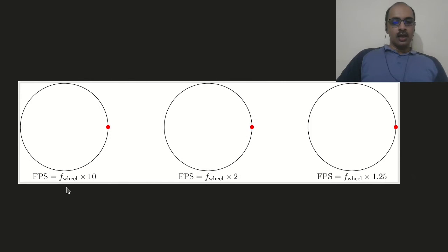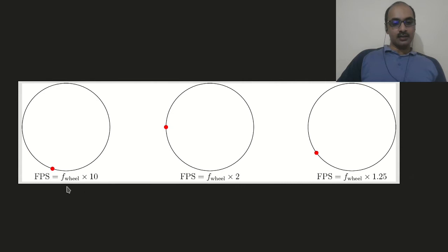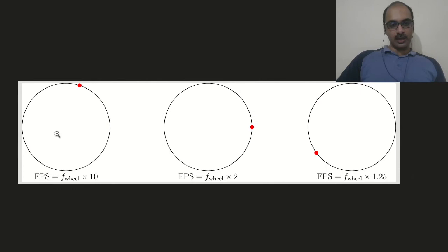In the first example, the red dot is placed on the rim, and the rate at which you are taking photos or frames is ten times the rate of rotation of the wheel. In other words, by the time that this red dot completes one full rotation, ten photos have been stored. You can see that this movement is captured quite well, and you are able to see that the wheel is moving in the clockwise direction.